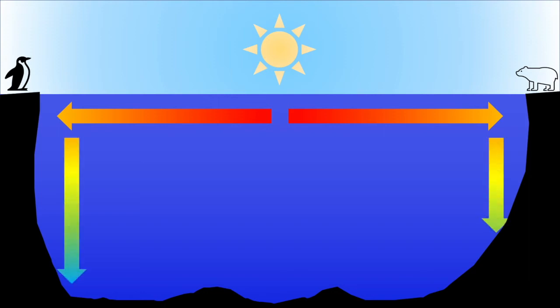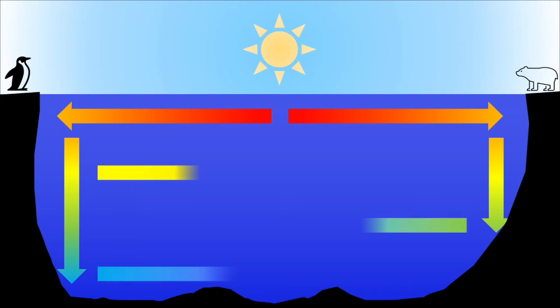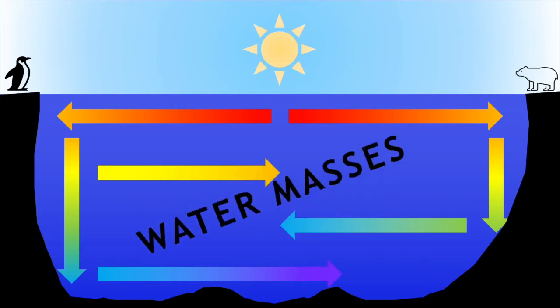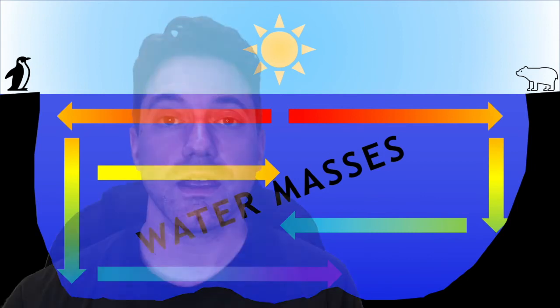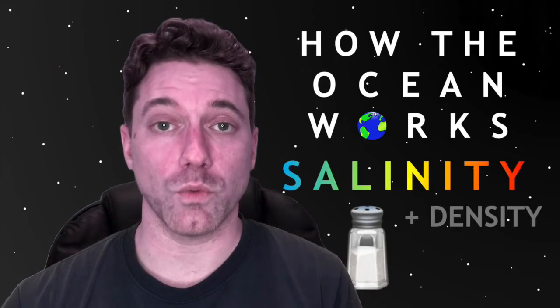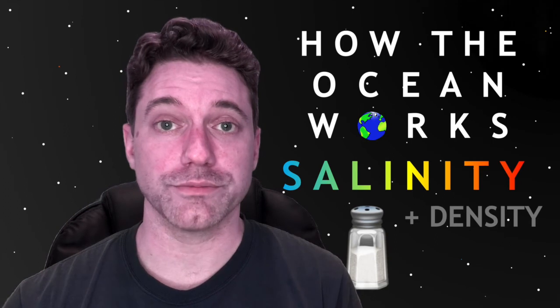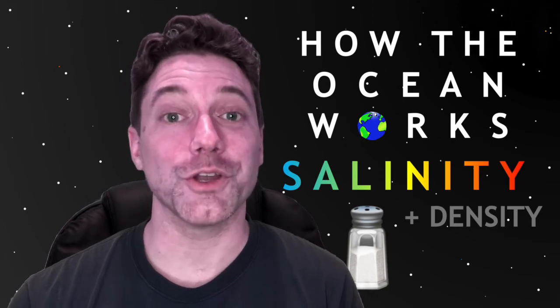And when this colder, dense water returns to the equator, it will be subducted underneath the warmer, less dense water, resulting in the creation of water masses. And in the next video, I'll talk about the role of salinity in water mass formation. Have a great week.